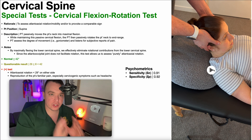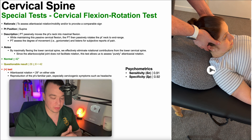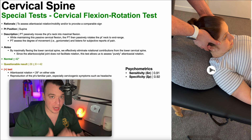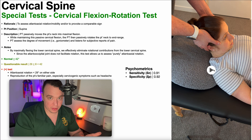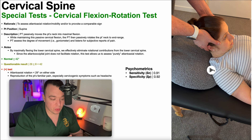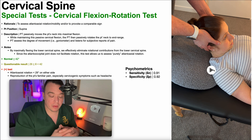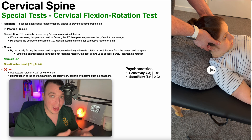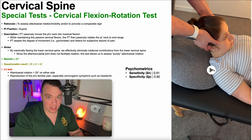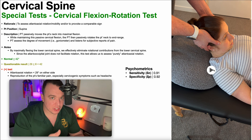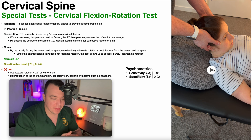Now if we consider the various joints of the cervical spine, we have really the entire lower cervical spine, which certainly allows movement in the sagittal plane — so flexion and extension. And then we have the atlanooccipital joint between the occipital condyles of the skull and the atlas, and that certainly allows flexion and extension. But if we consider the atlanoaxial joint between C1 and C2, it really doesn't allow very much flexion and extension.